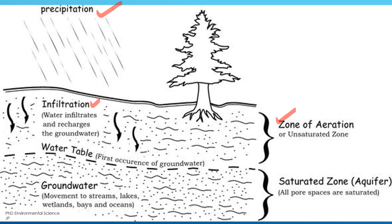The water table is the boundary between the unsaturated zone and the saturated zone — the level where the ground is fully saturated with water. Below this level, all the spaces between soil particles and rocks are filled with water. The saturated zone, or aquifer, is the area below the water table where all spaces are completely filled with water. This groundwater can move and eventually reach streams, lakes, wetlands and oceans.